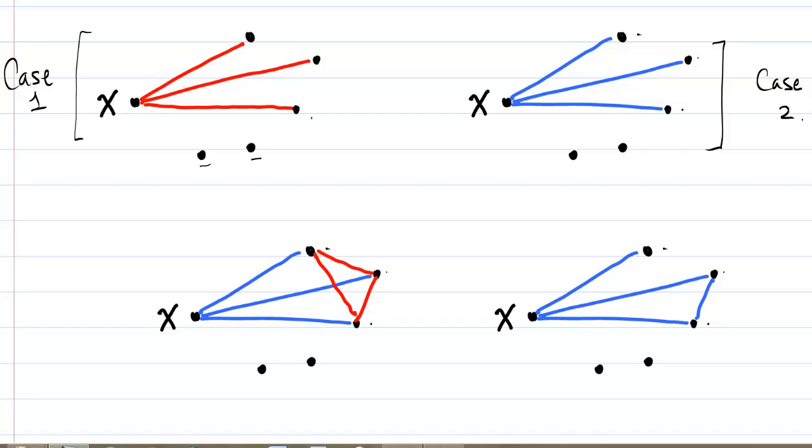Now the proof for case two is very similar to the proof for case one, except the role of friendship and enemies are reversed. So here we have X and his three friends. If they're all enemies with each other, we have a group of three who are all mutual enemies.